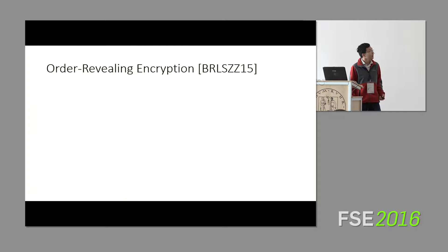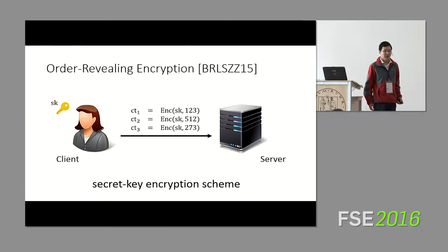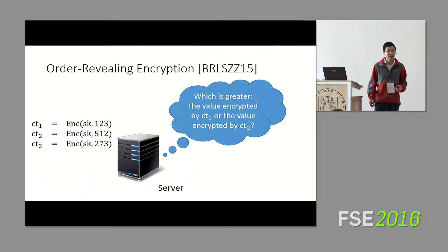An order-revealing encryption scheme is a secret key encryption scheme where the client who holds a secret key is able to encrypt numbers, and the client can then send these numbers to a server. What the server can do with these ciphertexts is it's able to compare them. The server has a collection of encryptions, and there is a publicly evaluatable function that allows the server to take two ciphertexts and determine the ordering on those ciphertexts.